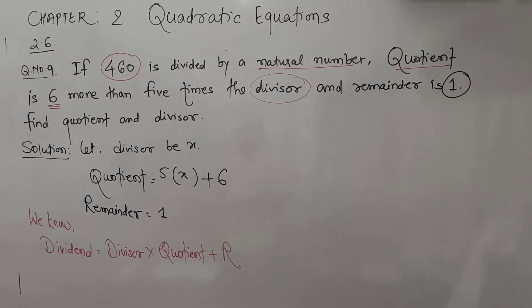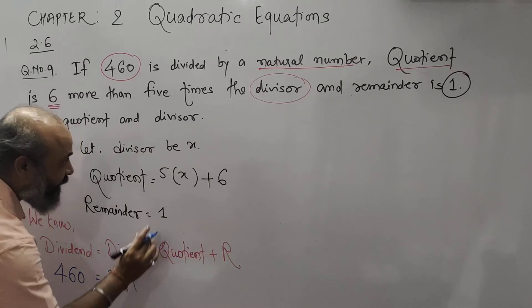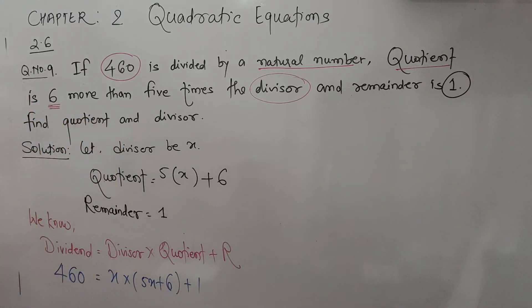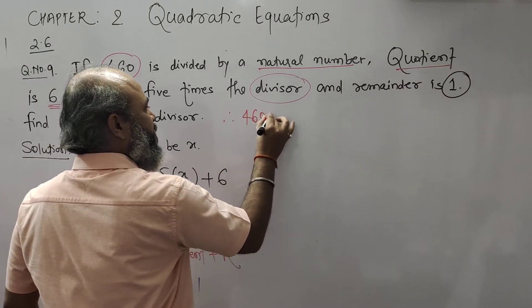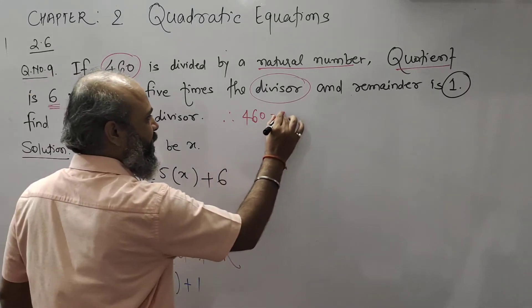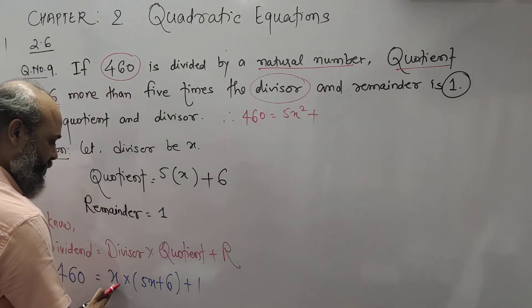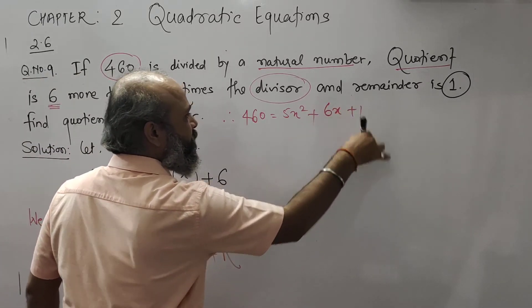Now what is the dividend? Dividend is 460. Divisor is x, quotient is 5x plus 6, and remainder is 1. Therefore you will get: 460 = x(5x + 6) + 1, which expands to 5x² + 6x + 1.